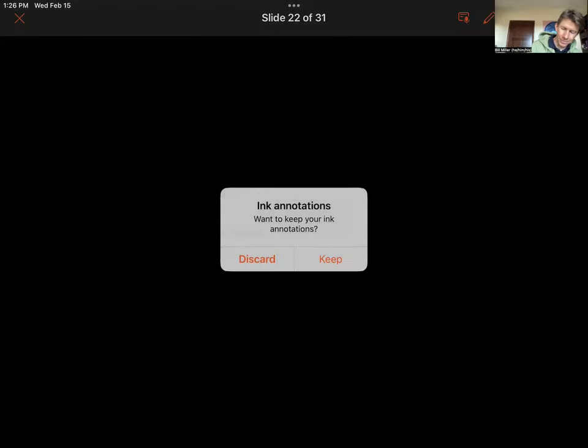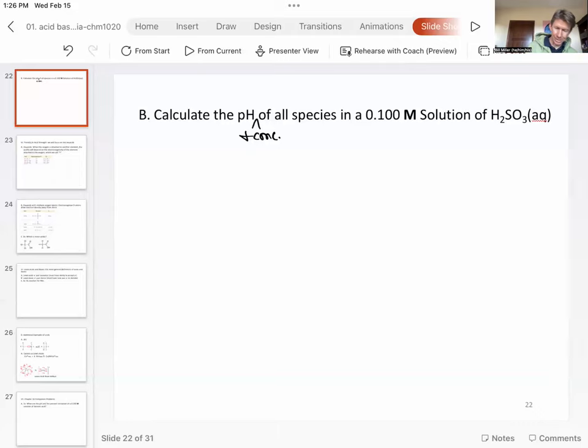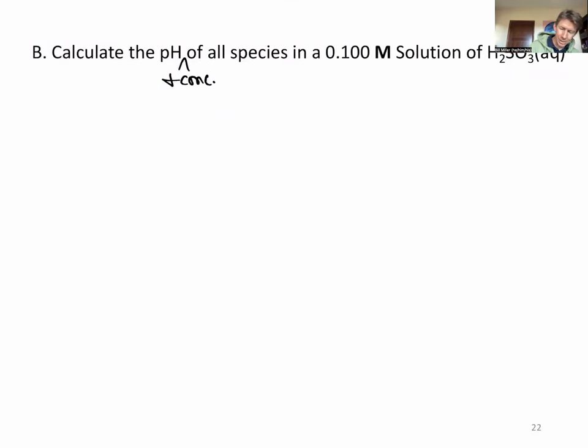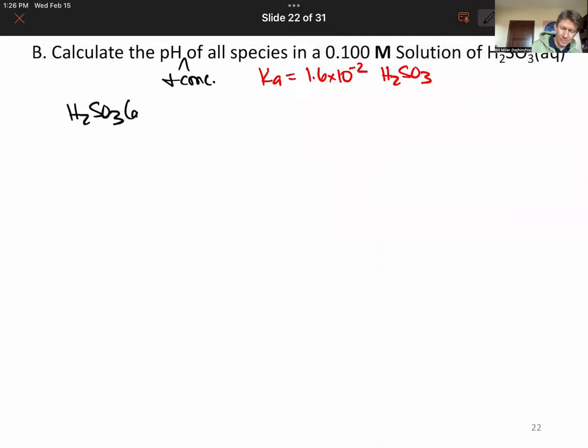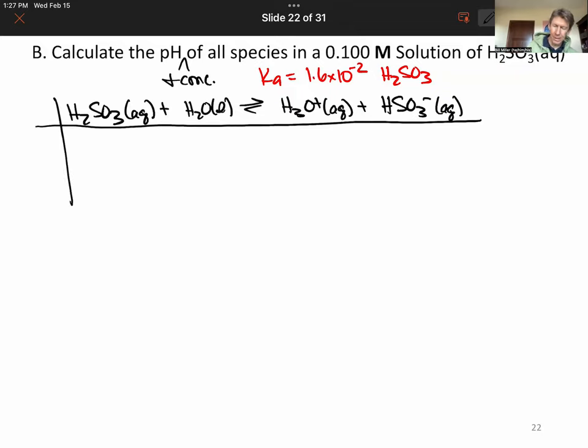And so Ka equals 1.6 times 10 to the minus 2 for H2SO3. Let's write out our ice table. For the Ka reaction, we're going to get hydronium and hydrogen sulfite. This part is very much the same. 0.100 minus X. Water is a liquid, so we don't have to worry about it. Start with approximately zero and zero of the hydrogen sulfite and add X to it.